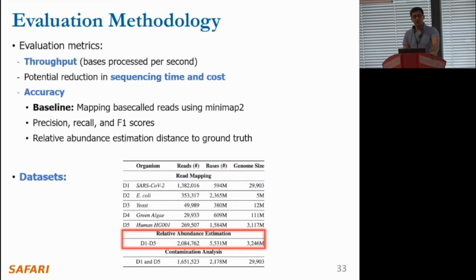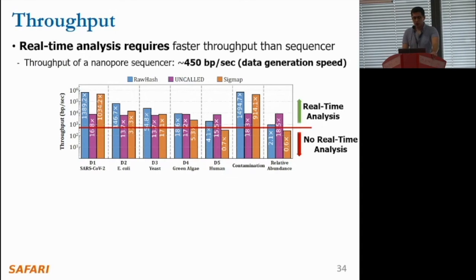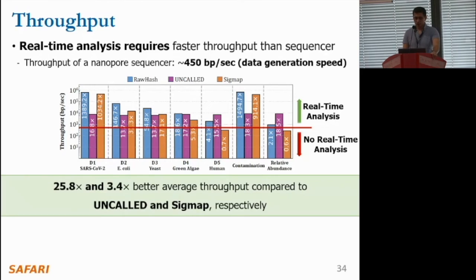For relative amounts estimation we additionally calculate the distance of each tool's estimation to the ground truth. We use five real datasets including large genomes such as the human genome. For relative amounts estimation we combine reads and reference genomes from all datasets D1 to D5, and for contamination analysis we combine COVID-19 and human read sets mapped to the COVID-19 reference genome. On the y-axis of this figure we show throughput results from each tool, with improvements over the throughput of a nanopore sequencer shown inside the bars. The nanopore sequencer throughput is around 400 bases per second.